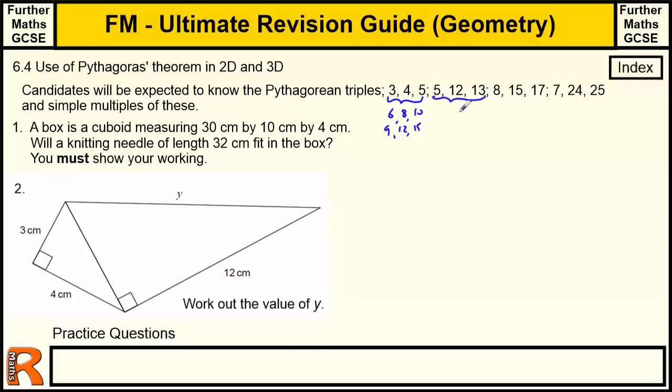The other one that is relatively common is the 5, 12, 13 and multiples of that. But these two are specifically said that you need to be aware of, which are not very common. In fact, I wouldn't know these off by heart unless I was prepping for this exam. So you need to make sure you have those in mind.